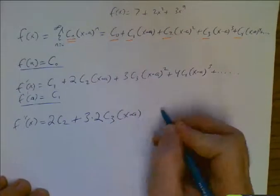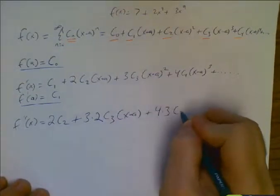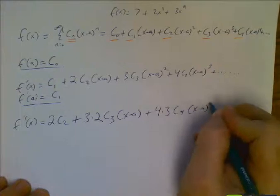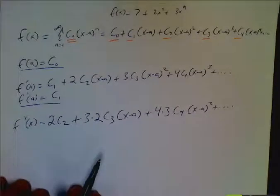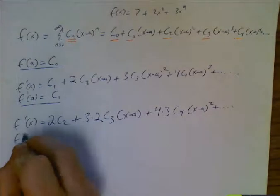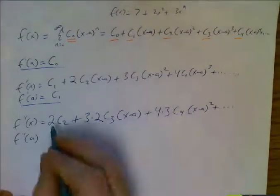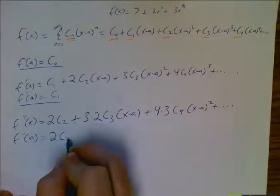x minus a to the first, plus four times three, c four, x minus a to the second. Again, I'm not writing 12. I'm writing four times three, and if I want f double prime of a, I'm going to plug a in, and all these terms go to zero except for this one, which is two c two.